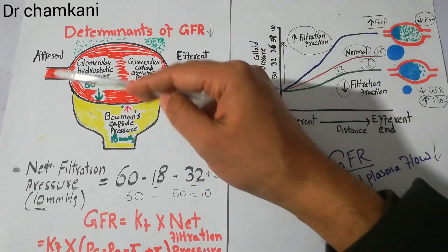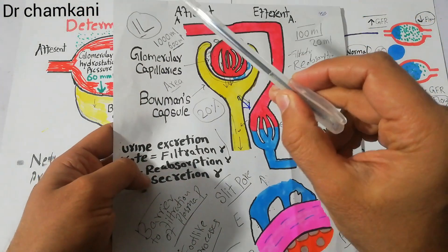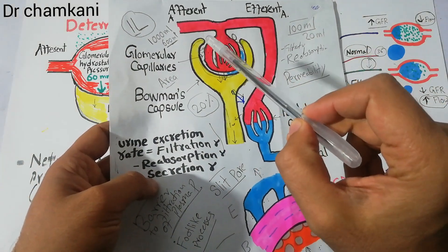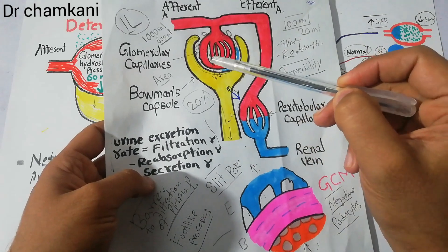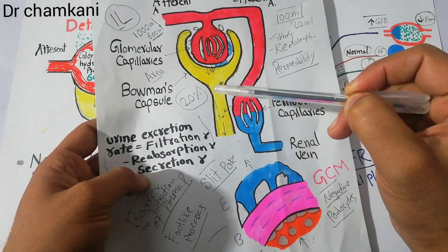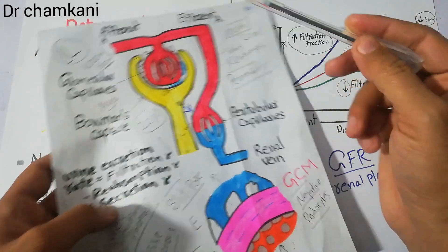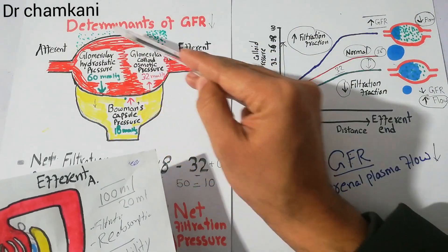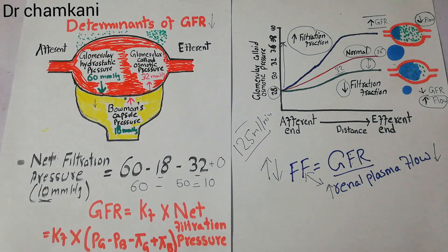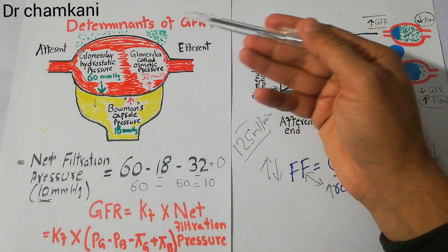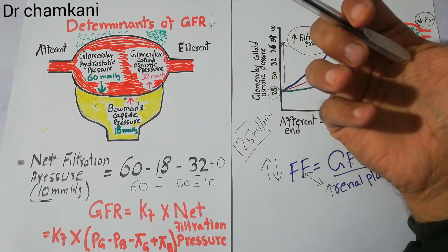This diagram is a simplified version showing that inside the kidney, afferent arterioles bring blood to the glomerular capillaries where filtration occurs. The filtrate then moves into the Bowman's capsule and through the nephron tubules. The remaining blood leads to the efferent arterioles. So here is the afferent arteriole, here is the glomerular capillary, and here is the efferent arteriole.